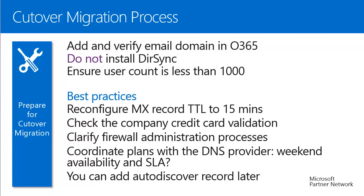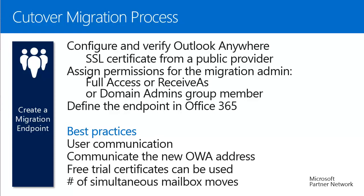When you add your actual domain record, you are requested to add the Autodiscover record. However, you can do that later, when you are ready to switch your Autodiscover record. Since the cutover migration process uses RPC over HTTPS — also called Outlook Anywhere — you need to install and use a public SSL certificate from a trusted public provider. If you don't have one yet, a free trial certificate is sufficient for this migration. After the migration, you don't need your on-premise Exchange server or SSL certificate anymore, so you can simply drop it.